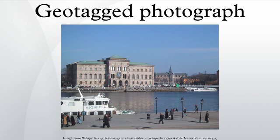When geotagged photos are uploaded to online sharing communities such as Flickr, Panoramio or Moblog, the photo can be placed onto a map to view the location the photo was taken. In this way, users can browse photos from a map, search for photos from a given area, and find related photos of the same place from other users. Many smartphones automatically geotag their photos by default. Photographers who prefer not to reveal their location can turn this feature off. Additionally, smartphones can use their GPS to geotag photos taken with an external camera.